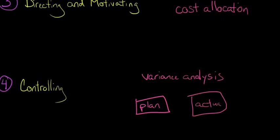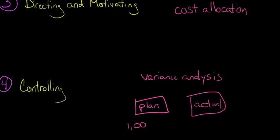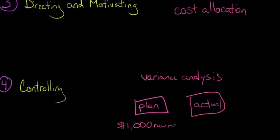So think about it this way. You say, I think I'm going to buy a hundred units or spend a thousand dollars on raw materials to build these couches. Right. So I'm going to spend a thousand dollars. That's the budget. That's the plan that we talked about in step one.